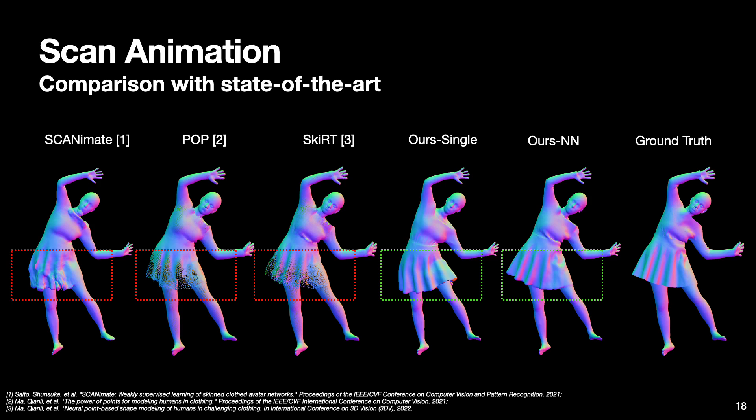Due to the reliance on linear blend skinning, the baseline methods often struggle with loose garments and skirts. In contrast, our method offers a new paradigm for clothing modeling which directly optimizes for a smooth deformation field that preserves the continuity of cloth surfaces.